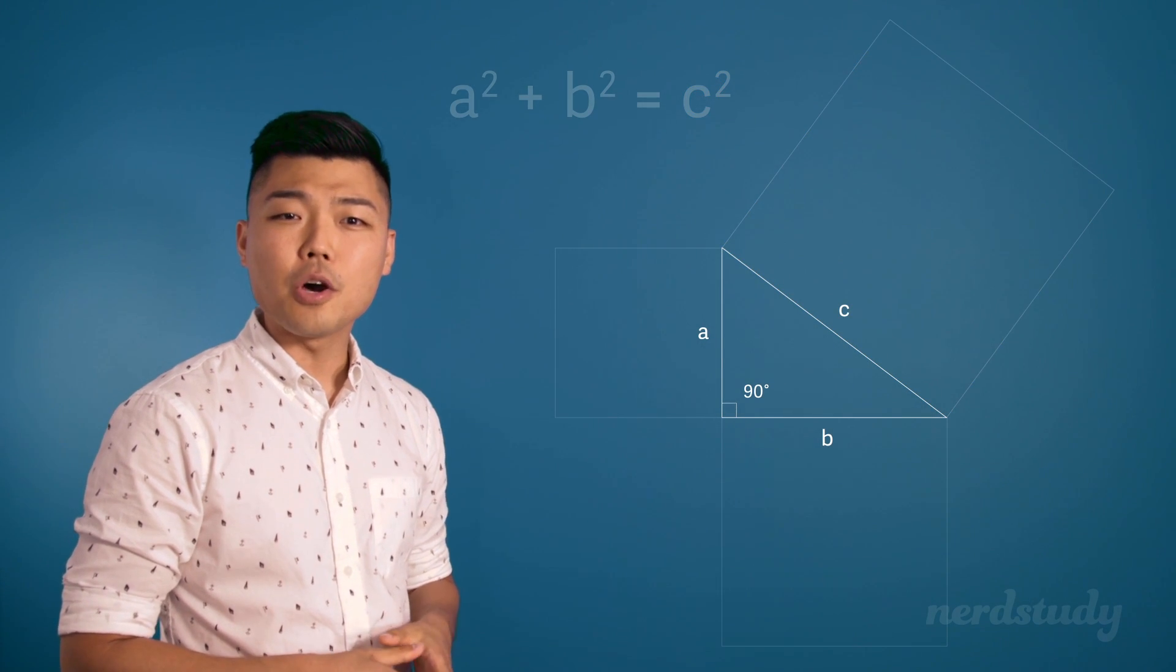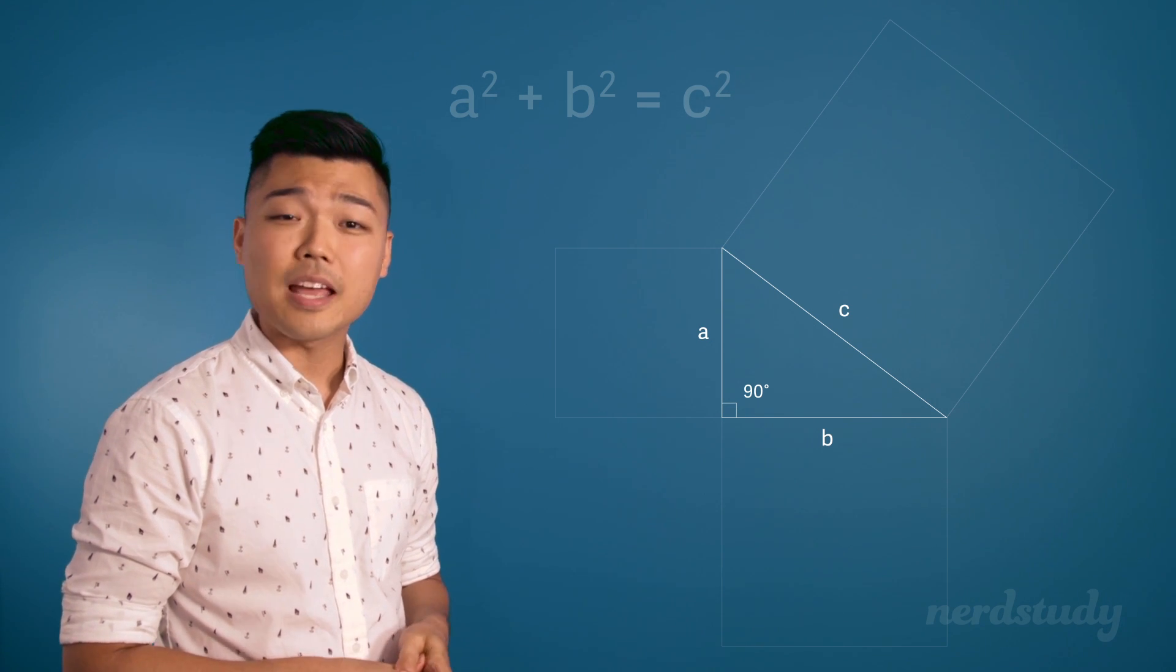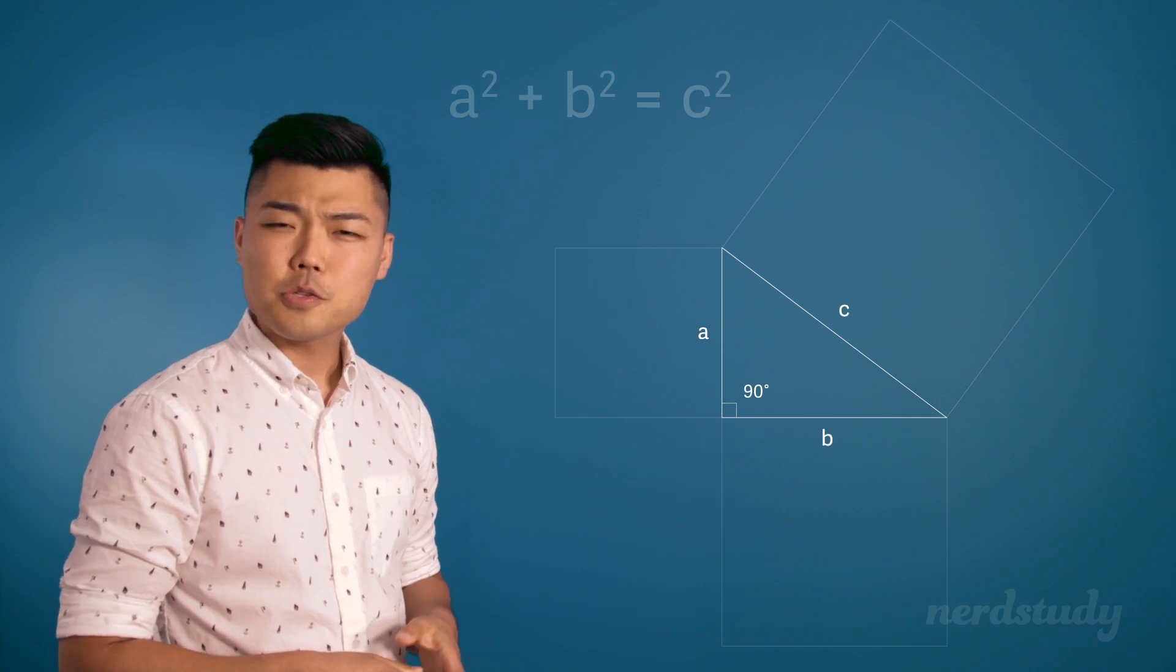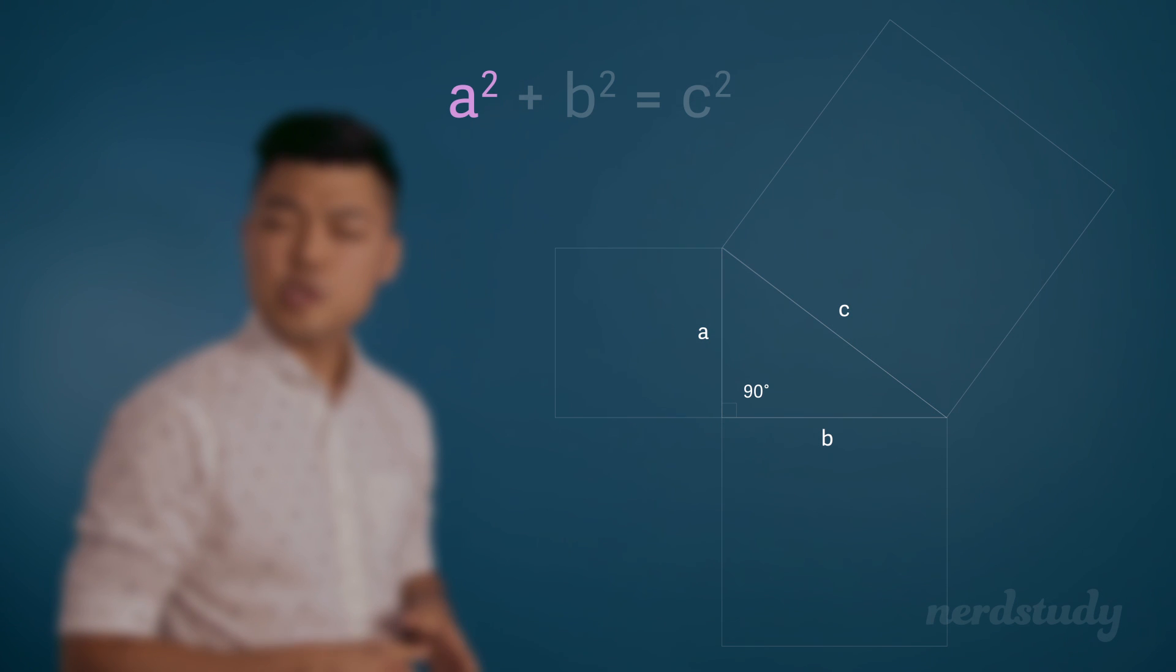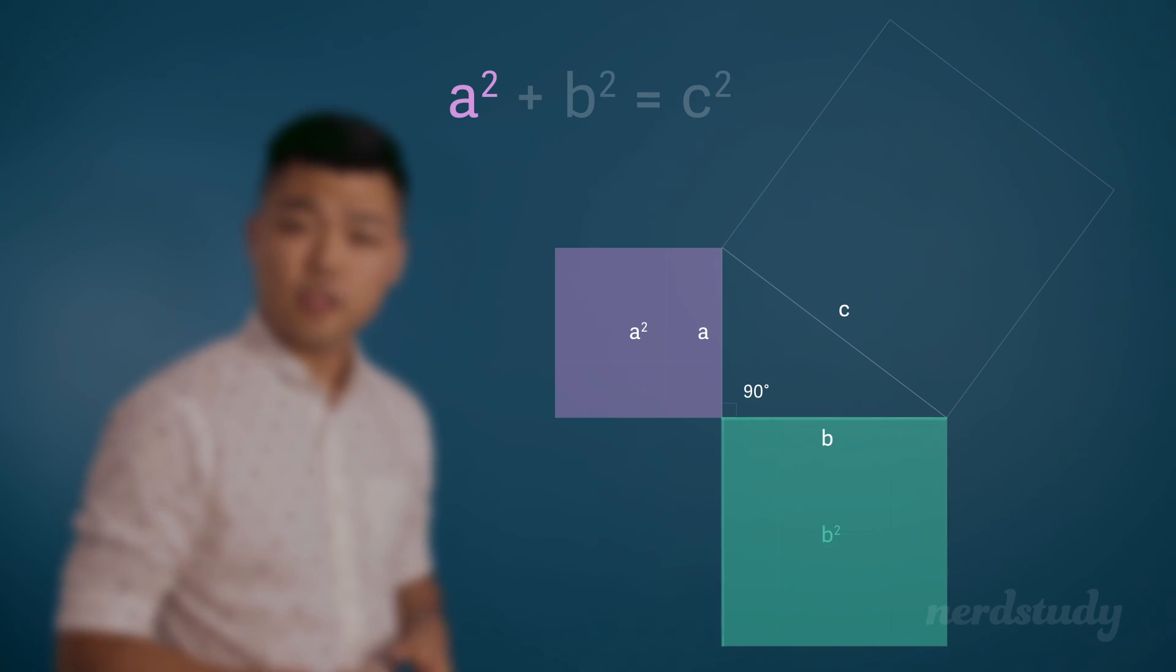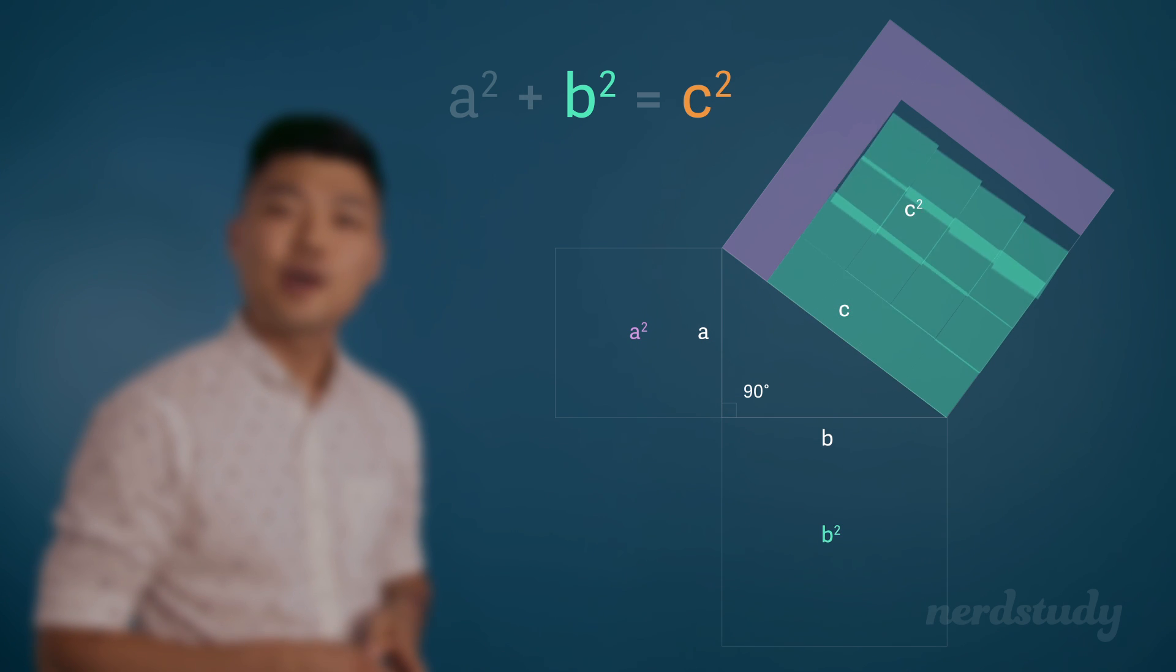Alright, so now that we know what this a², b², and c² is referring to, let's reread the Pythagorean theorem and think about what it's actually saying. If we square the length of one of the legs, which is to say that we are getting the area of this square, and then we add that area to the area that we get when we square the other leg, then we will get exactly the area of this square as determined by the hypotenuse. And if we actually try to take the areas of both squares and fill it into c², we'll see that it fits perfectly since the theorem is actually true.